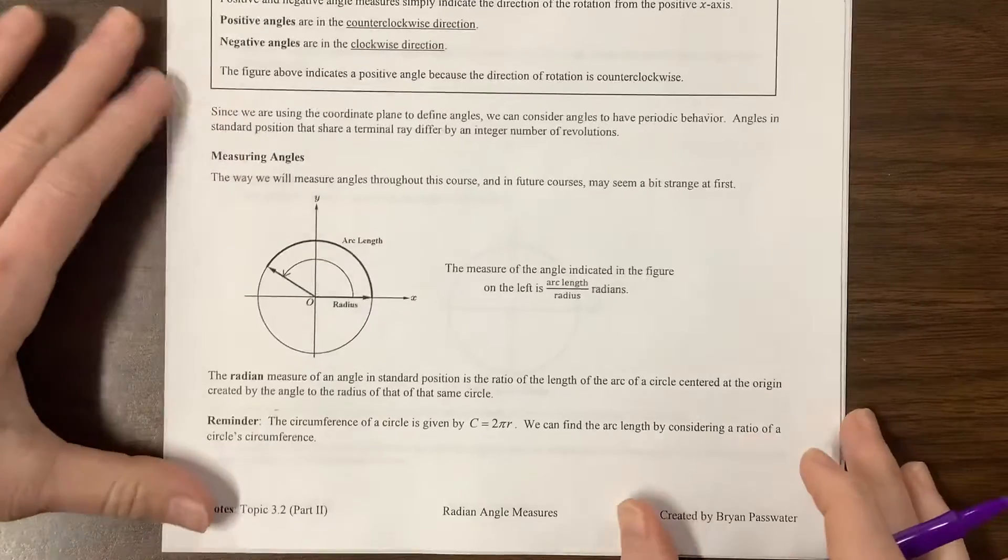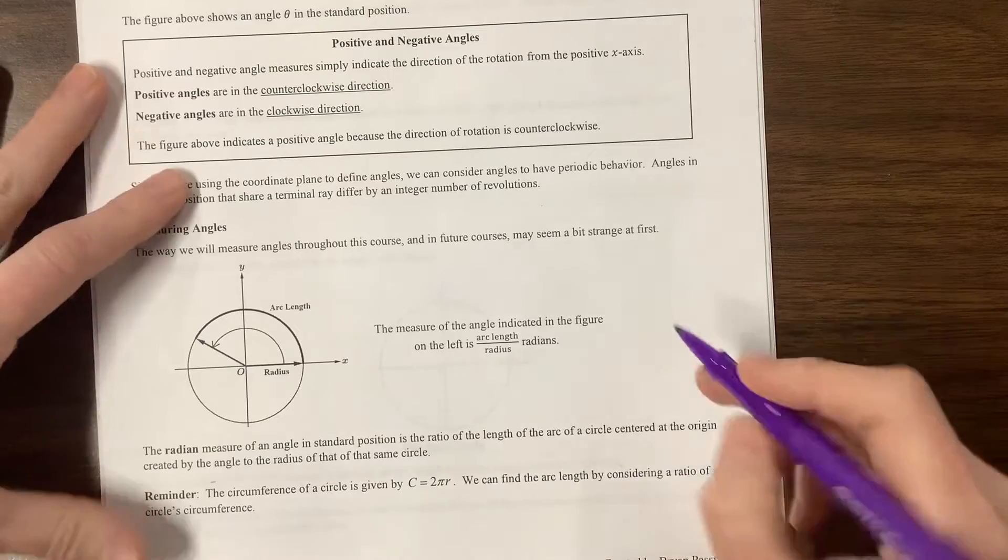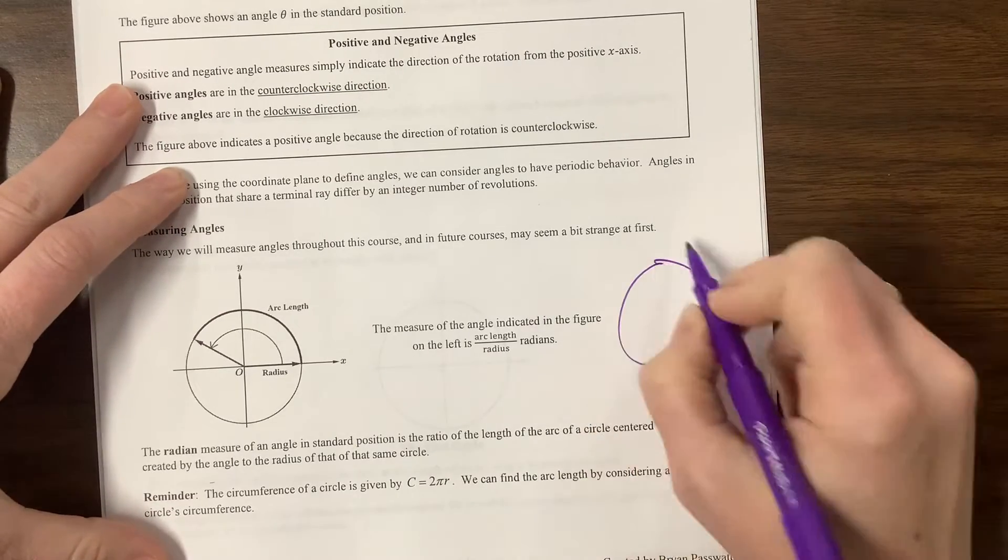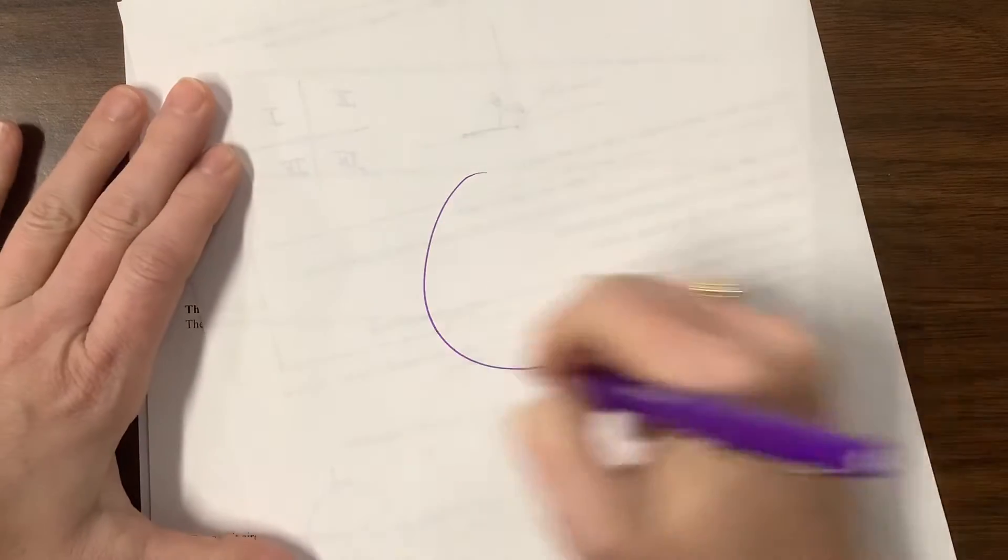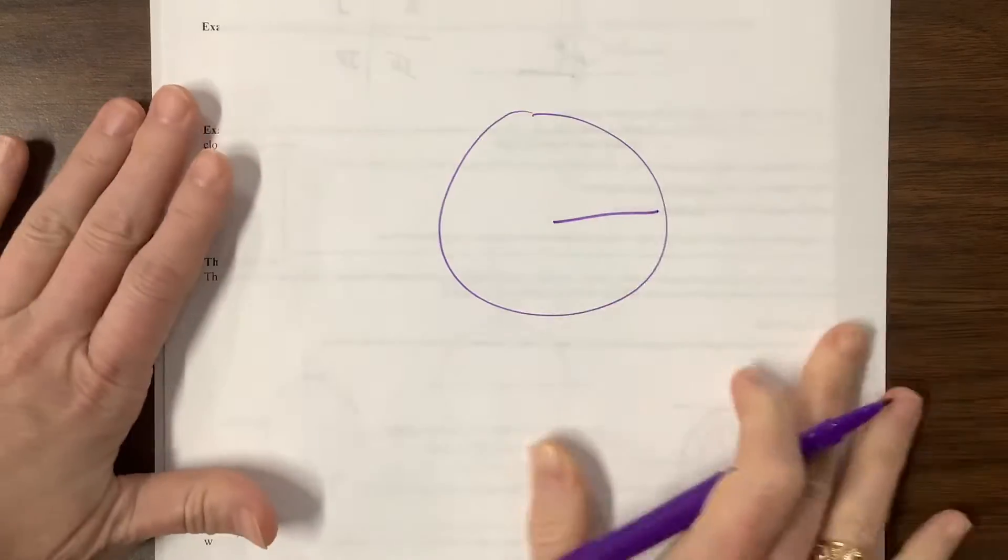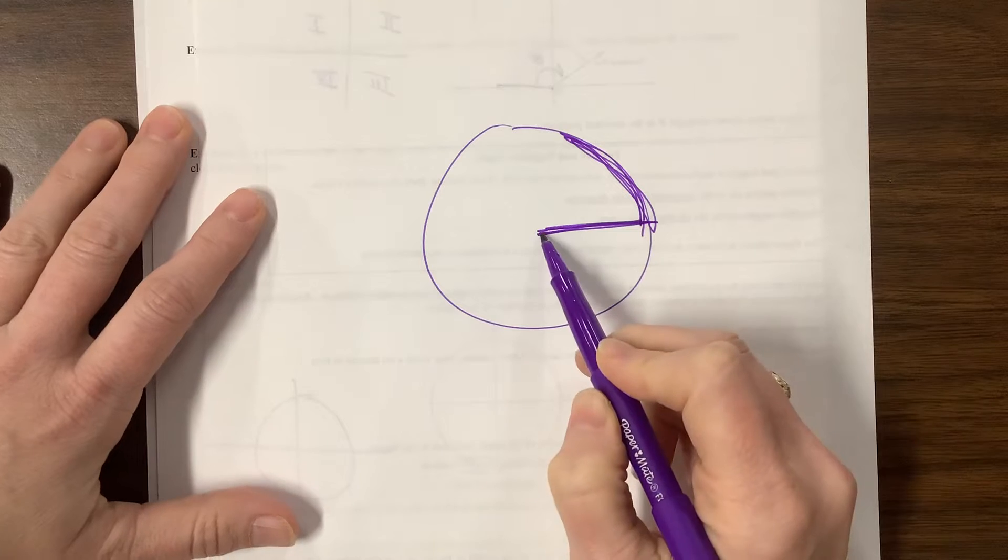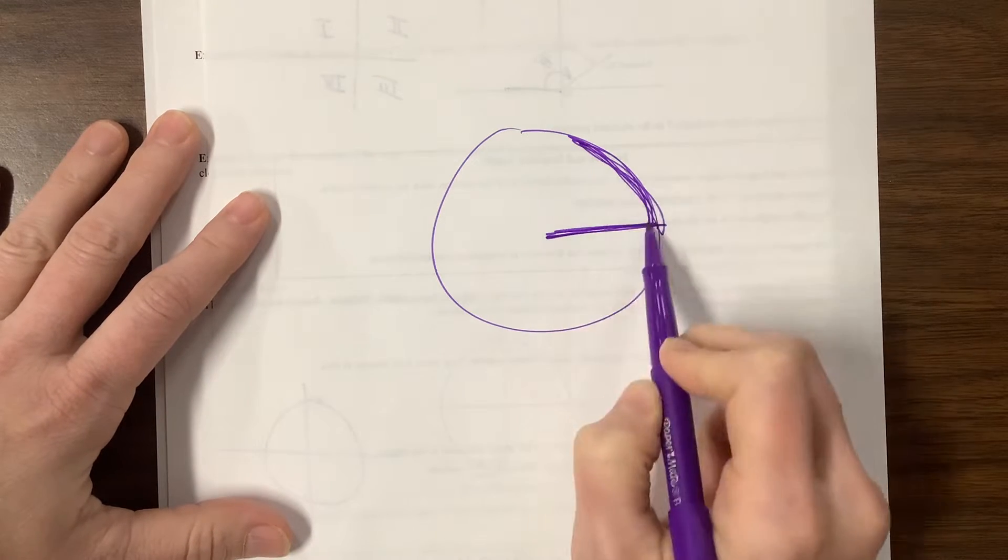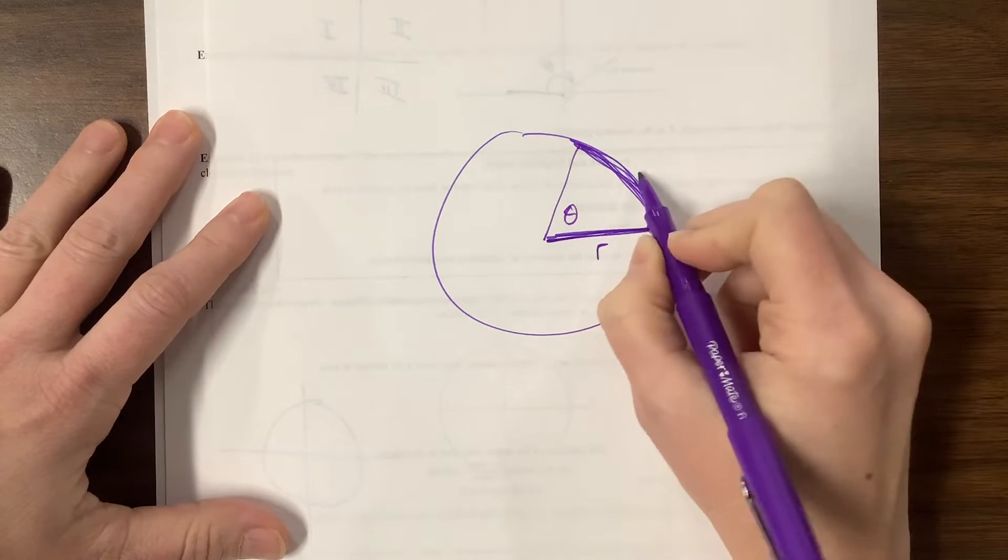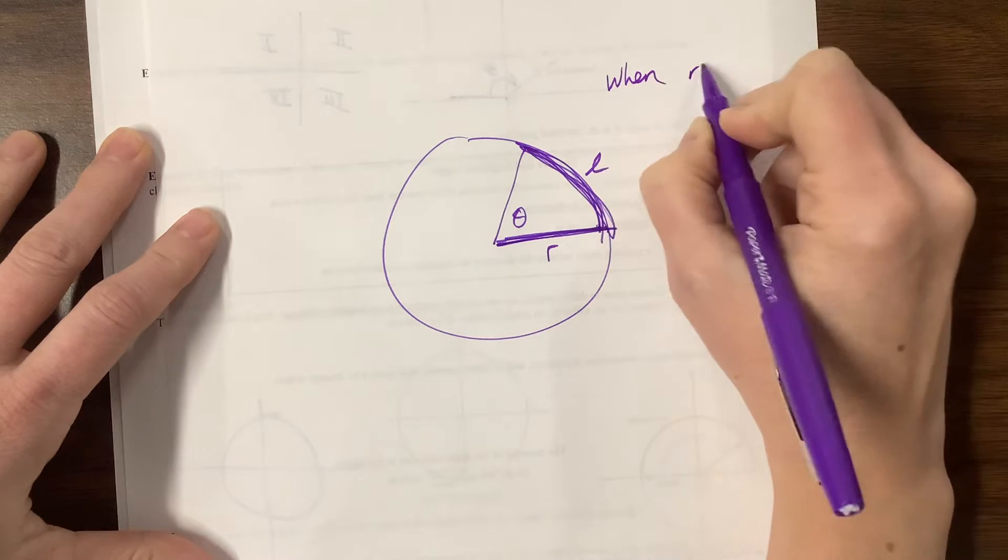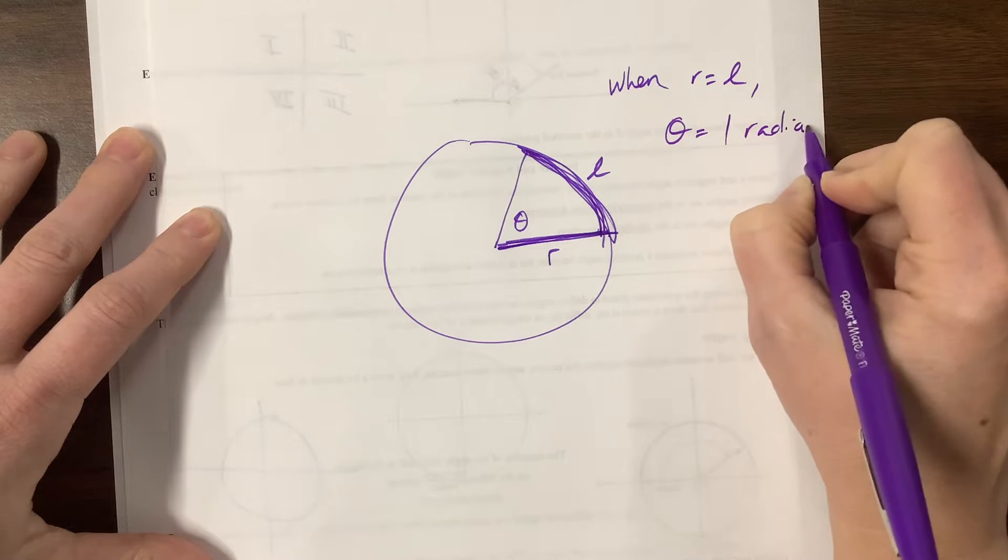So then one of the ways that we measure angles is using radians. And the way that I like to think about this is that on a circle, when the radius and the arc length are the same, if I am a little ant, if I walk from here to here, or I walk from here to here, and I've gone the same distance, this angle that's formed, when r and l, let's say this, when r equals l, theta equals 1 radian.